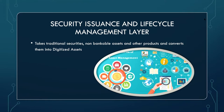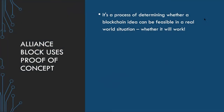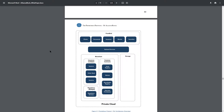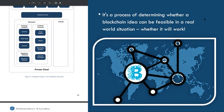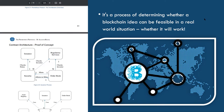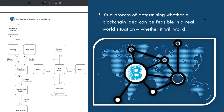As you know, AllianceBlock lets you collateralize any real-world asset. Now, AllianceBlock uses proof of concept. In case you're wondering what proof of concept is — it is a process of determining whether a blockchain idea can be feasible in a real-world situation, and whether the idea will function as envisioned.